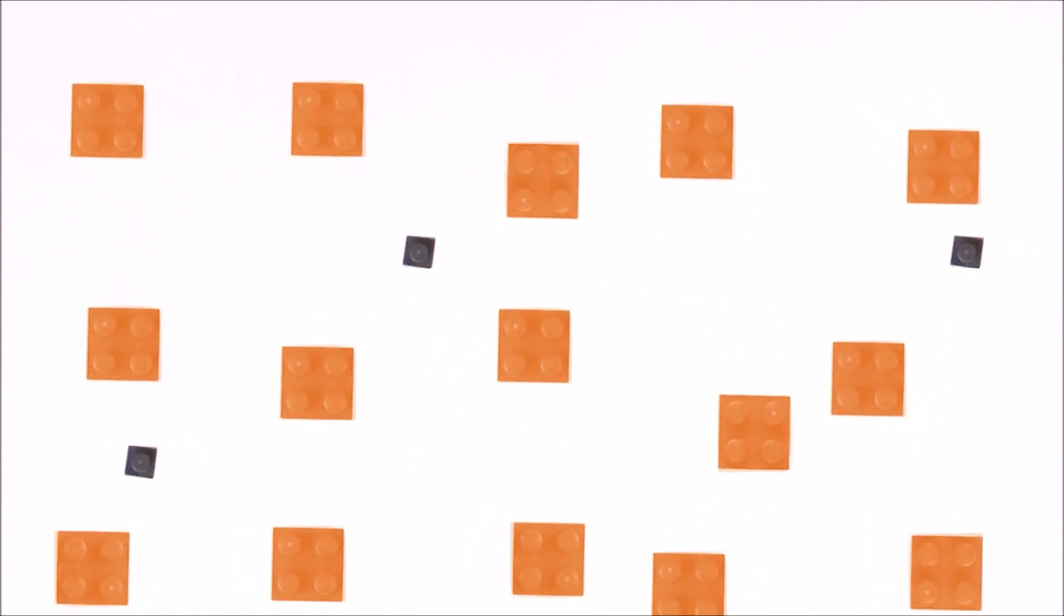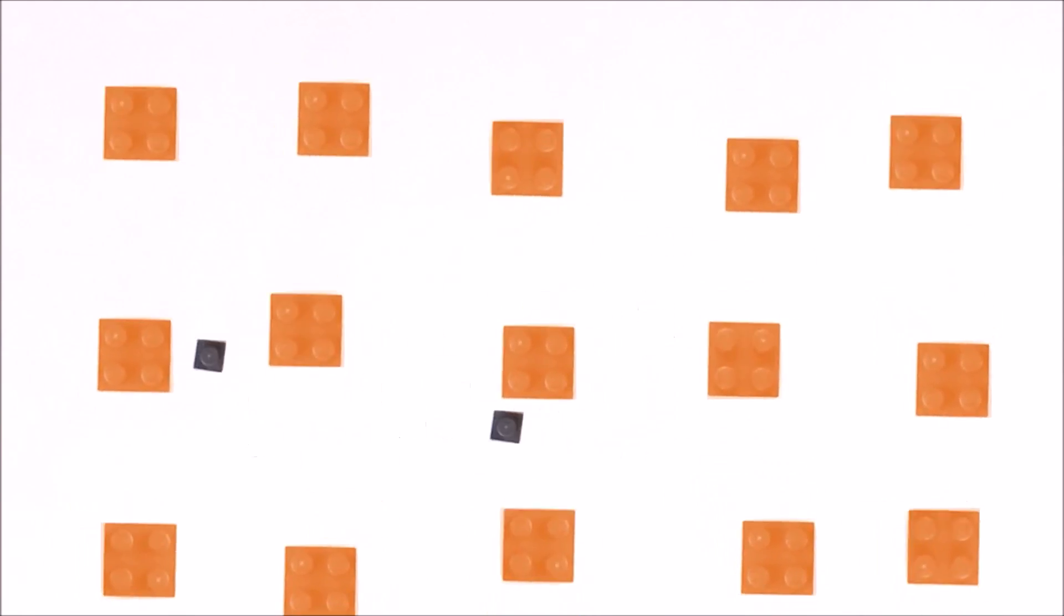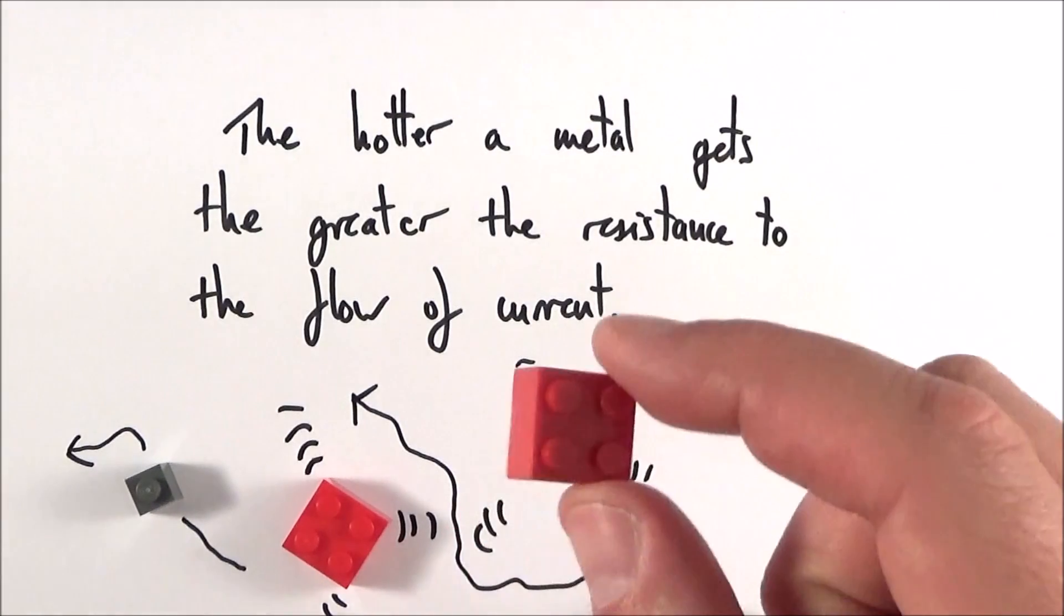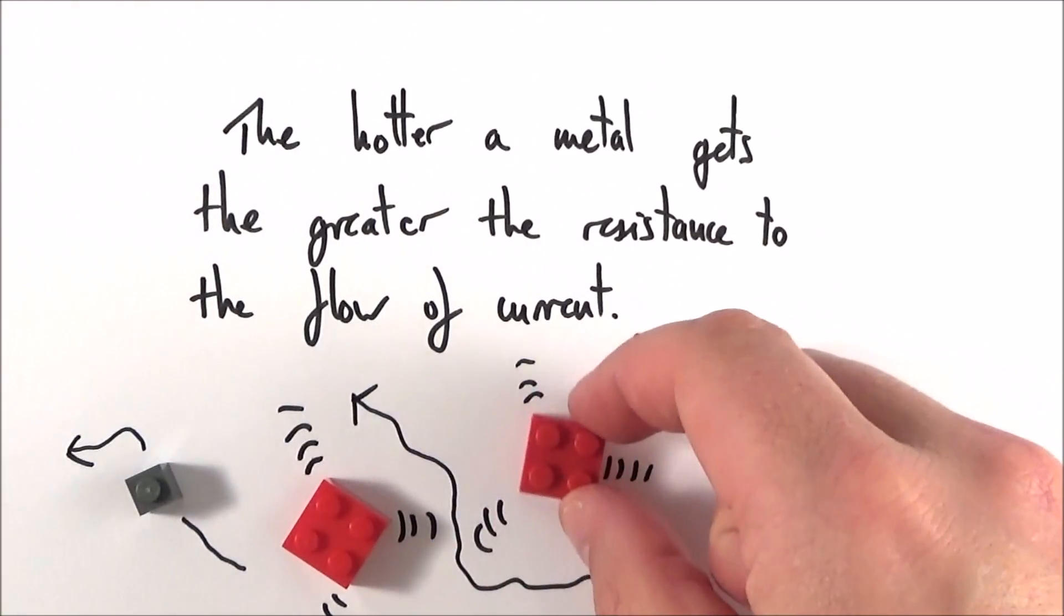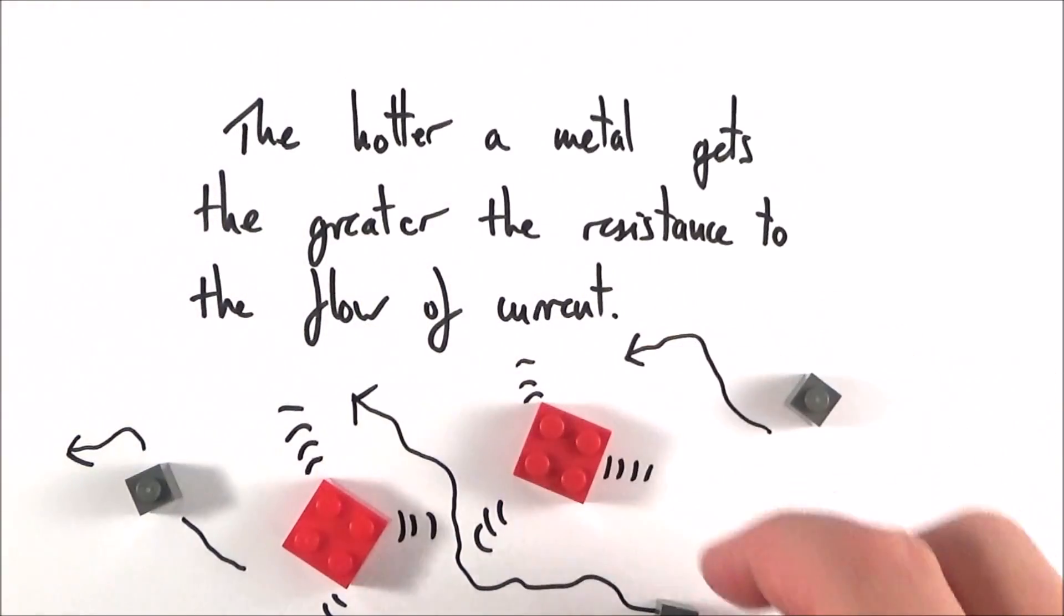So to summarize, the hotter a metal gets, the more the lattice tends to vibrate, and therefore there's more chance of this lattice getting in the way of these charge carriers which are trying to move through it.